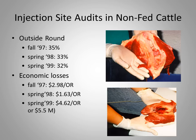We also conducted injection site audits in non-fed cattle — cows and bulls — looking at the outside round, which is the back thigh. We found about a third of our non-fed cattle had injection site scars. As you can see in these pictures, the scar tissue shown represents the amount of tissue that was damaged and must be trimmed and discarded. These economic losses on the outside round alone resulted in nearly $2 to $5 a head loss in trimmed and discarded muscle.